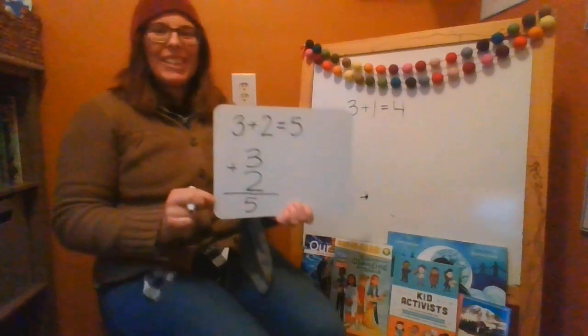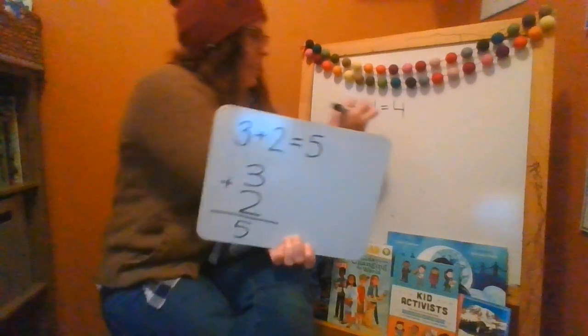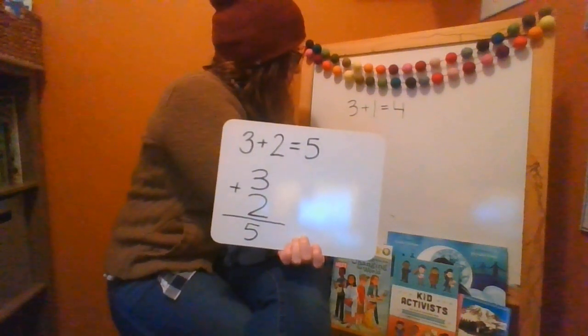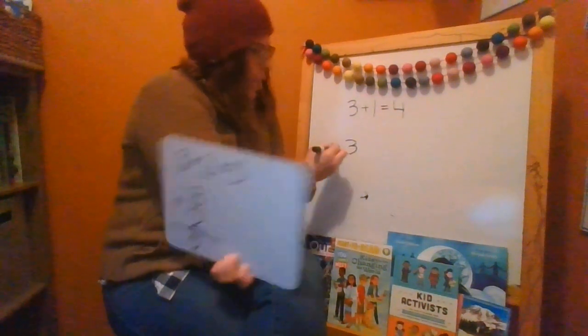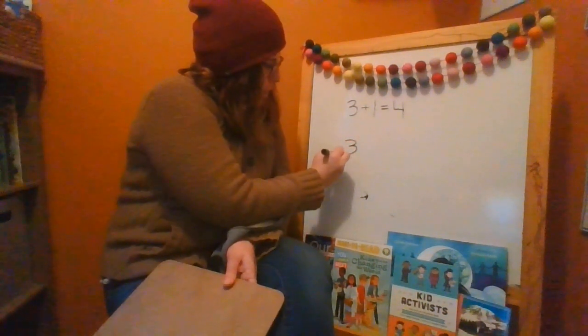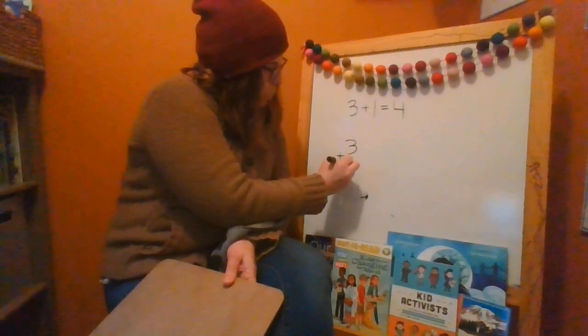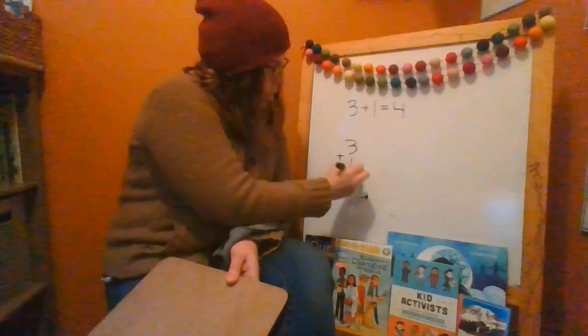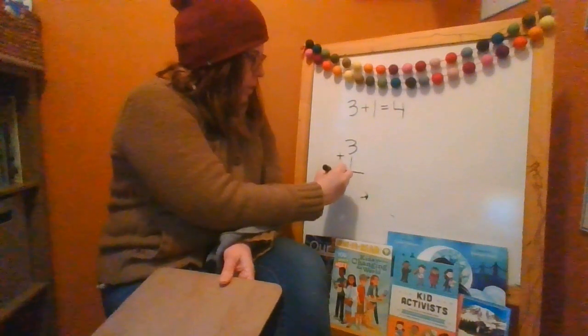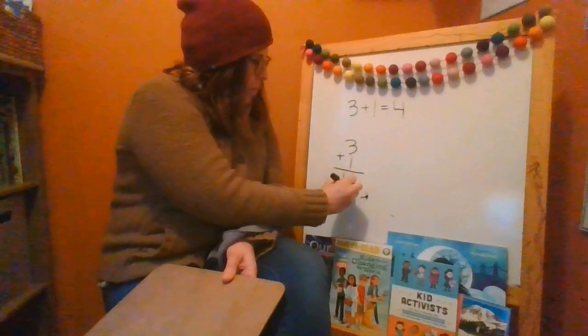Okay, are you ready to see what it would look like? It would look like this. 3. And remember the plus sign goes off to the side over here. 3 plus 1 equals 4.